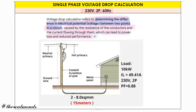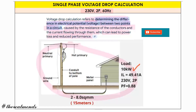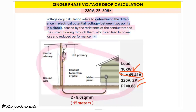Voltage drop can lead to power losses and reduced performance. We have a load of 10 kilowatts, a line current of 49.41 amperes, 230 volts, and a power factor of 0.88.